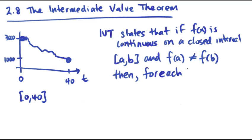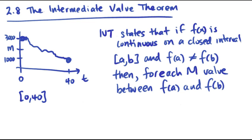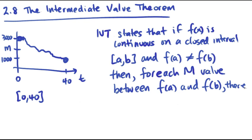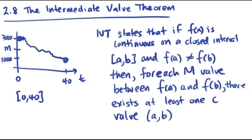For each M value between f(A) and f(B), there exists at least one C value on A to B such that, so somewhere in here there has to be a C value such that f(C) is your M value.